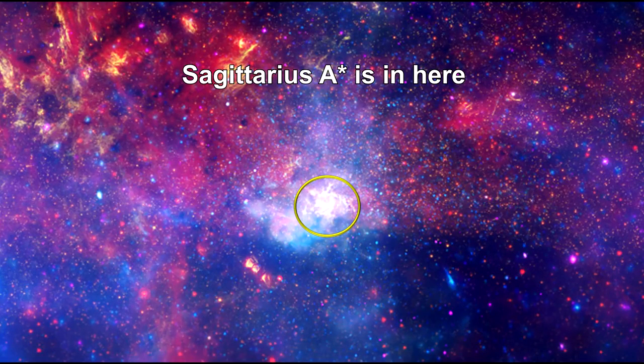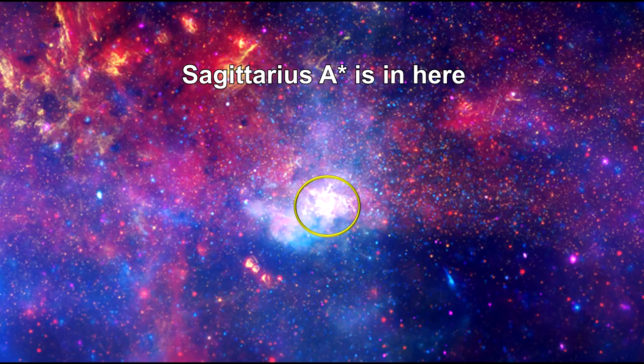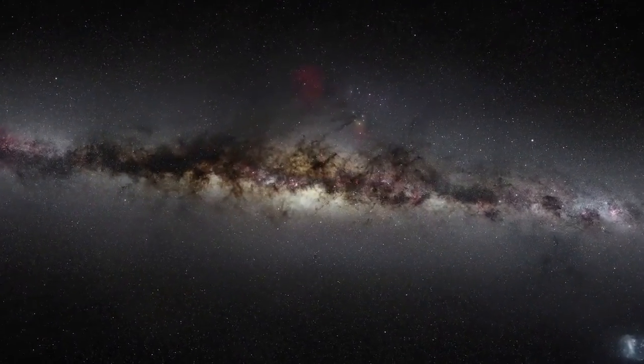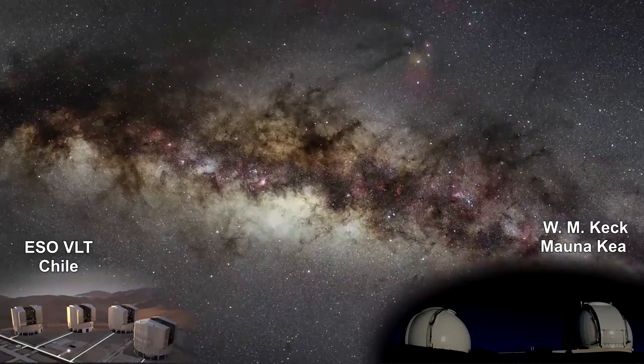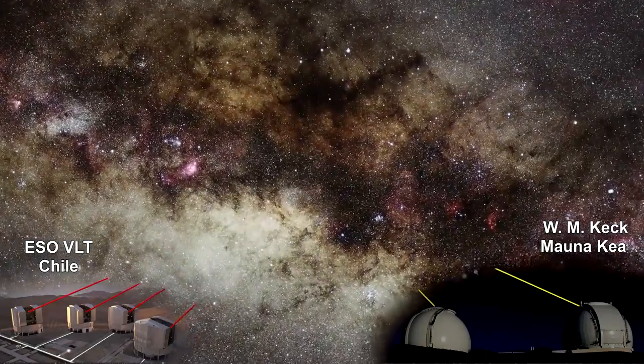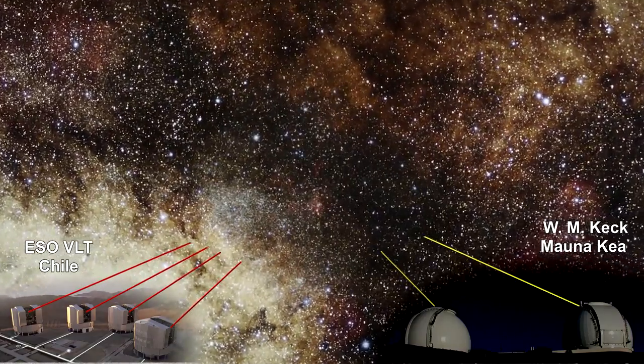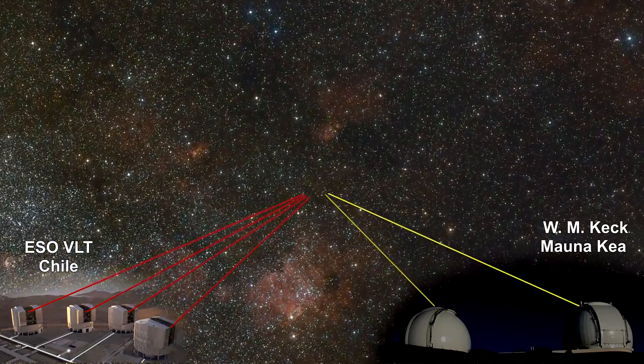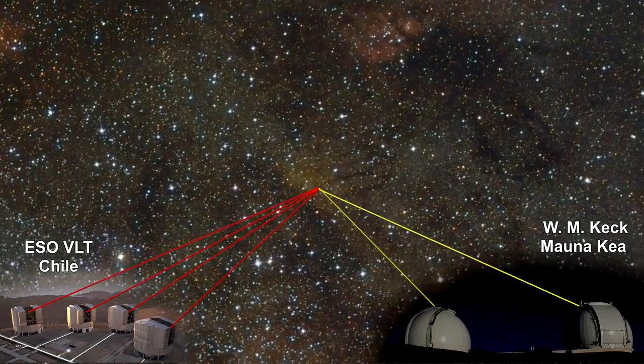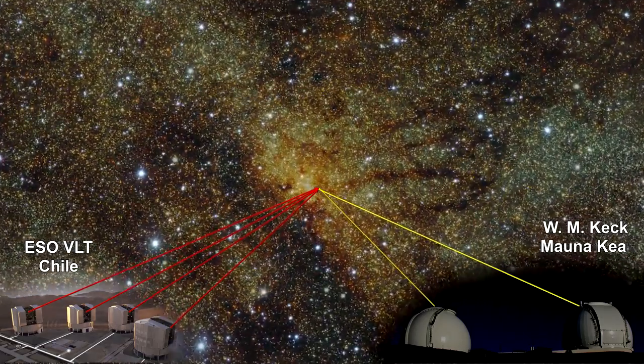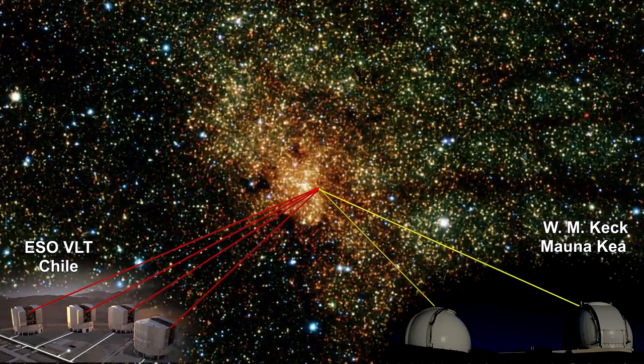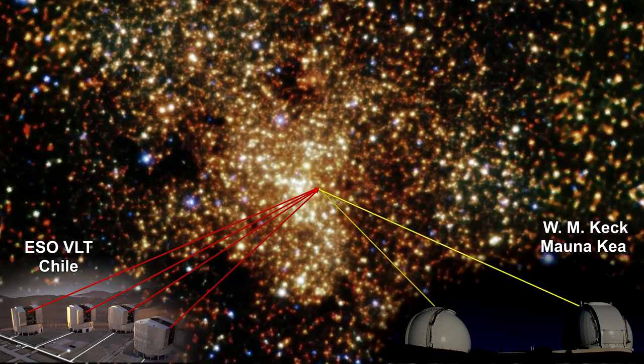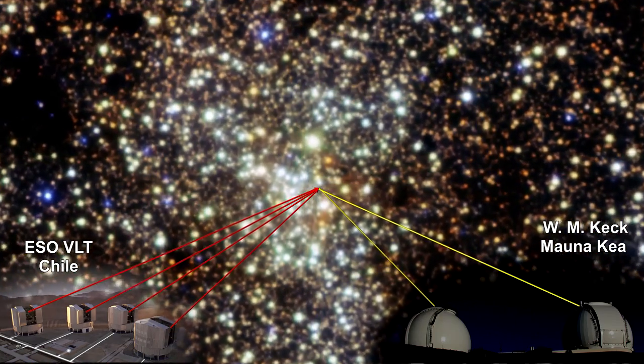The central object in the Milky Way is known as Sagittarius A-star, or SAG-A-star for short. It is surrounded by so many stars and gas and dust that it is almost impossible to see. Teams of astronomers and astrophysicists have been working on understanding Sagittarius A-star for over 25 years. The UCLA Galactic Center Group, along with the Keck Observatory on top of the Mauna Kea volcano in Hawaii, and the European Southern Observatory and its array of very large telescopes in Chile, and the Max Planck Institute for Extraterrestrial Physics in Germany, and many others have made dramatic progress in advancing our understanding of this critically important part of our galaxy.